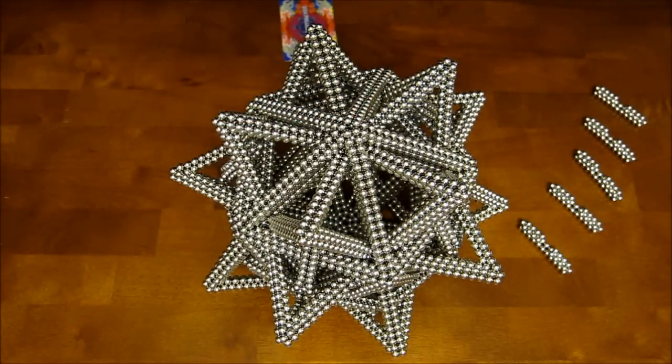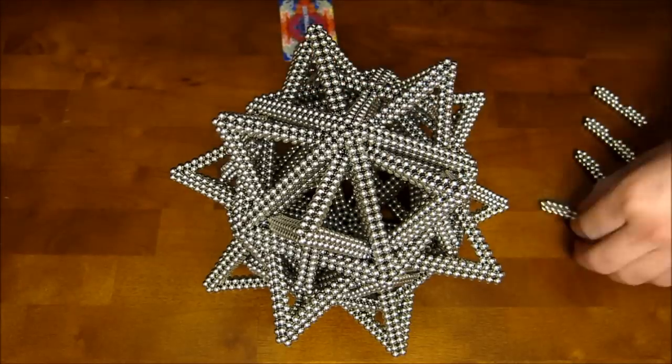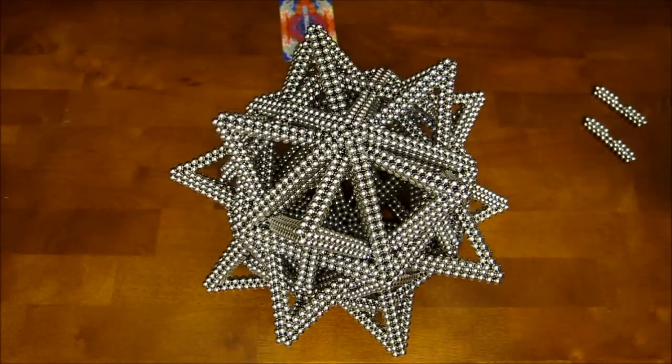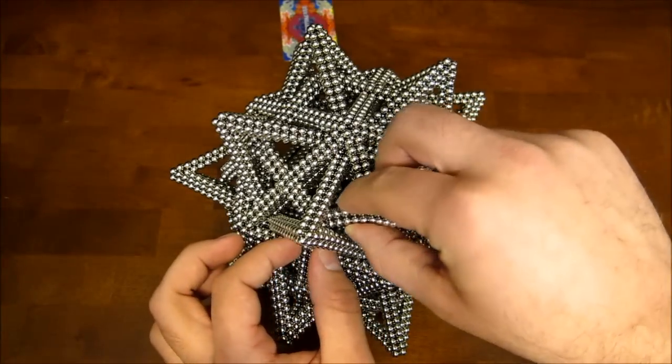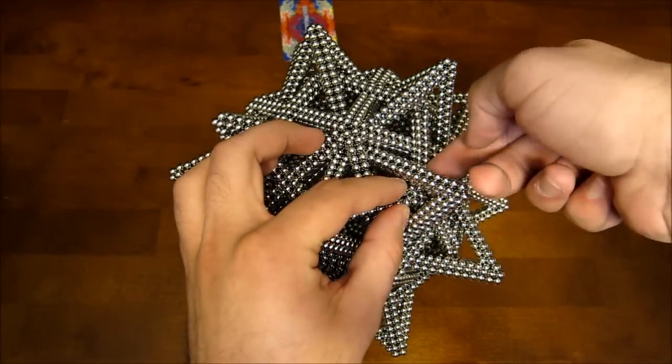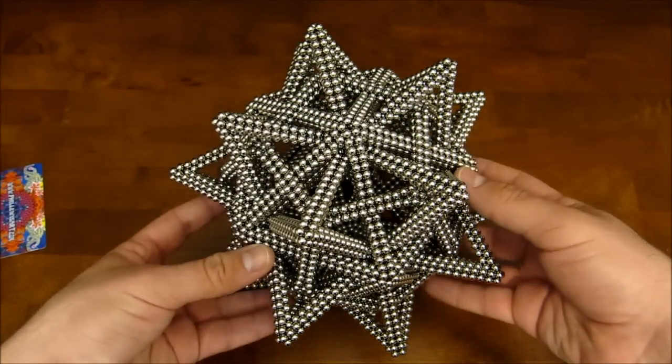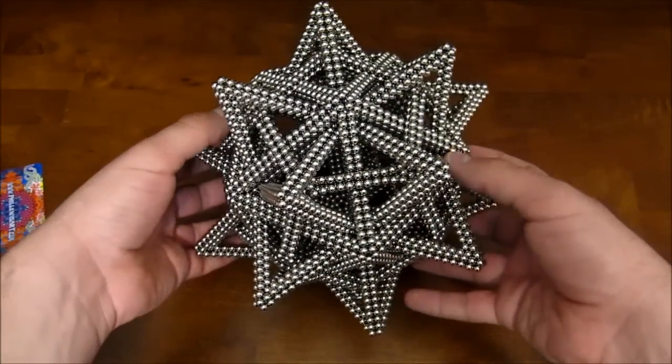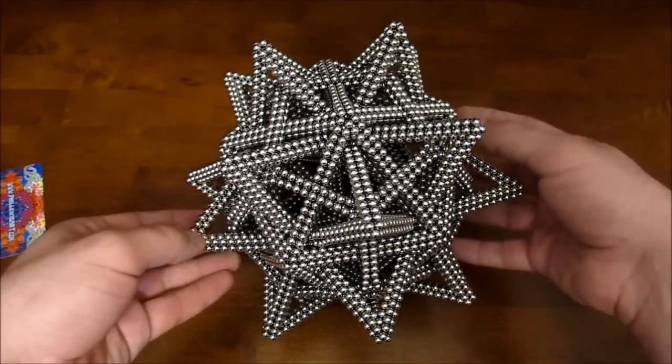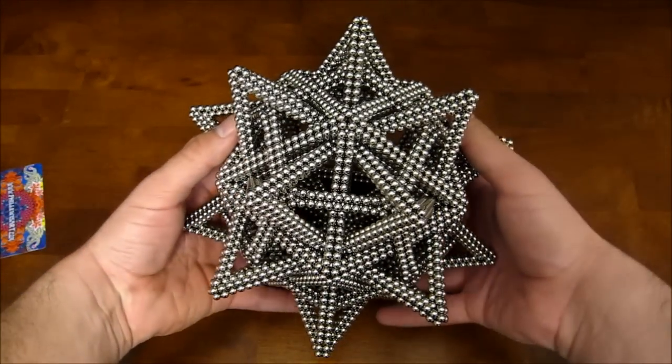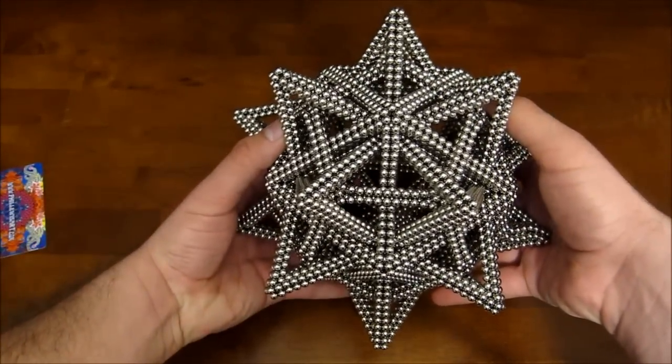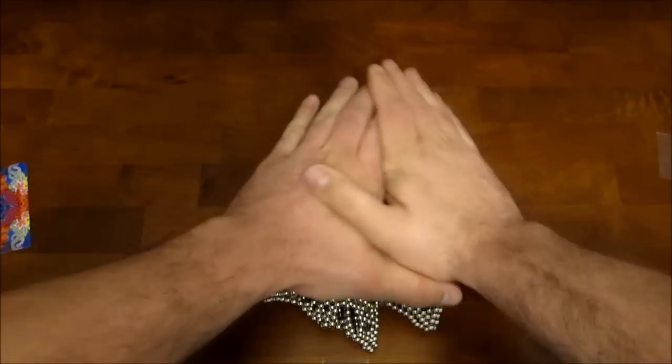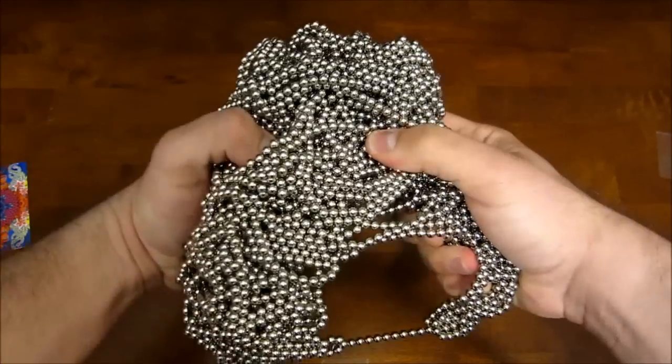And then last of all, you want to take these last five pieces and put them into place. And that is it. And that is how you make the interlaced polyhedra. This is it. We're going to smash it now. I loved it. It's great. I love it. Thank you.